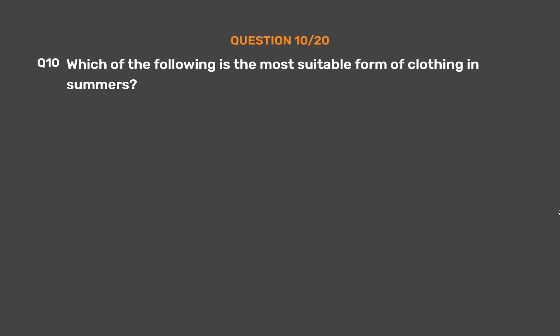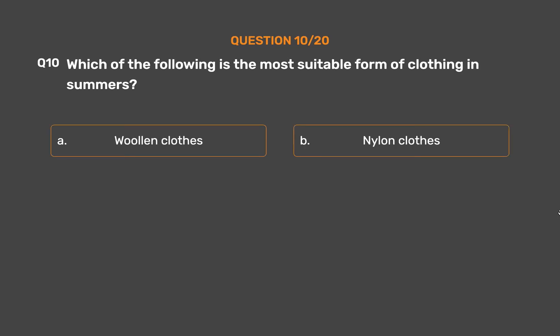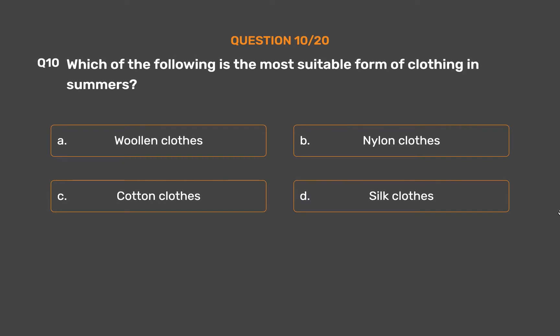Question number 10. Which of the following is the most suitable form of clothing in summers? Option A, Woolen clothes; Option B, Nylon clothes; Option C, Cotton clothes; Option D, Silk clothes.